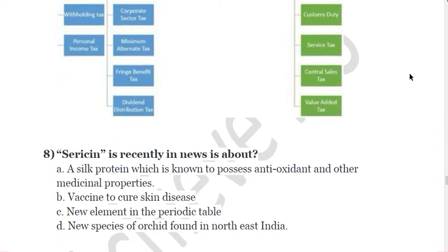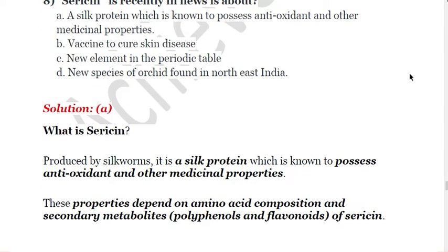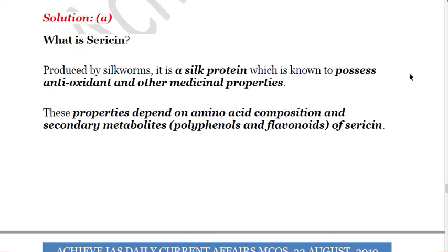Next question: Sericin is recently in the news. It is about: A. Silk protein known to possess antioxidant and other medicinal properties, B. Vaccine to cure skin diseases, C. New element in periodic table, D. New species of orchid found in northeastern India. The answer is A. Sericin is basically a silk protein known to possess antioxidant and other medicinal properties. Its properties depend upon the amino acid composition and secondary metabolites of Sericin, which differ from different sources of silk, and their variability depends on the length of the Sericin peptides.